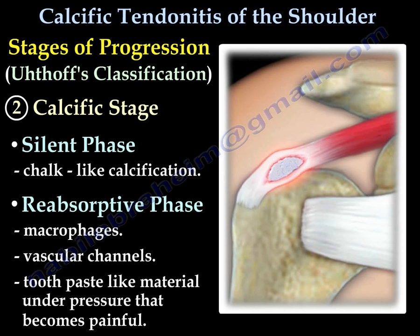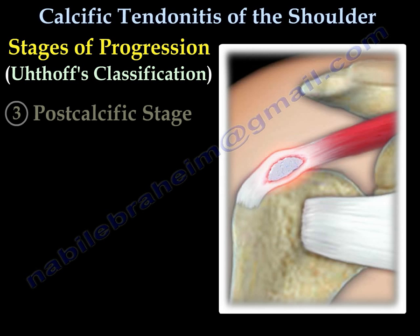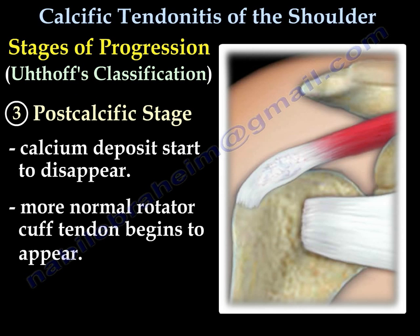The calcific stage has two phases. The silent phase involves a chalk-like calcification. The resorptive phase involves a lot of macrophages and vascular channels, with a toothpaste-like material under pressure that becomes very painful. The third stage is the post-calcific stage, where the calcium deposits start to disappear and a more normal cuff tendon begins to appear.